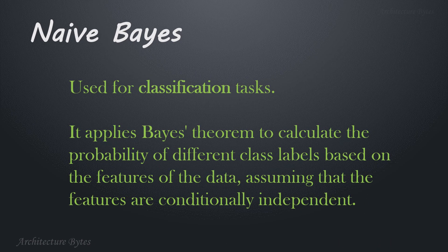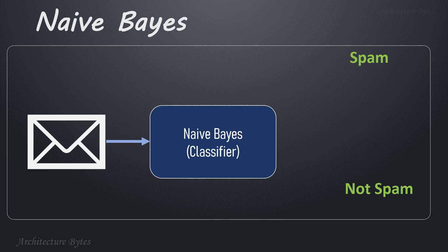Naive Bayes is used for classification tasks. It applies Bayes theorem to calculate the probability of different class labels based on the features of the data, assuming that the features are conditionally independent. Imagine you want to classify emails as spam or not spam. You use Naive Bayes to calculate the probability of an email being spam based on words it contains.